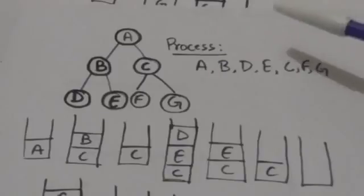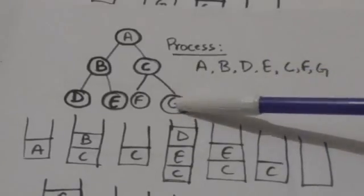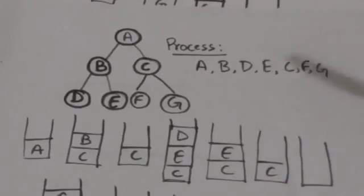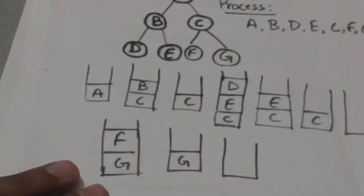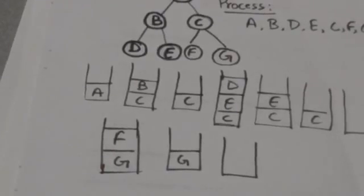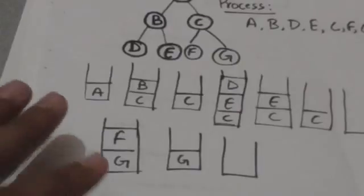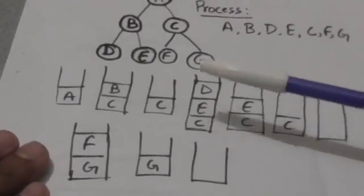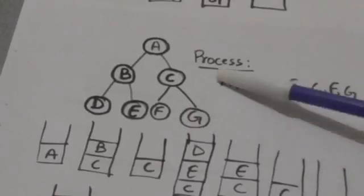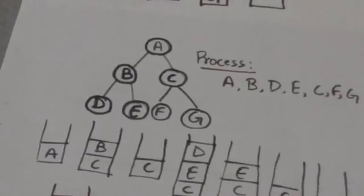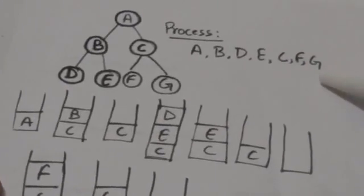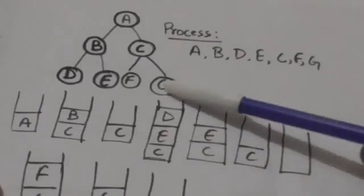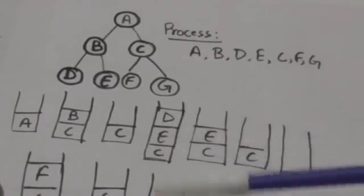We will push the right child of node C and then the left child of node C — that is F — into the stack. Now we will pop the top element from the stack, that is node F, and process it. Node F doesn't have any child so there is nothing to push into the stack. After this we will pop the top element from the stack, that is node G, and process it. Node G doesn't have any child so there is nothing to push into the stack.